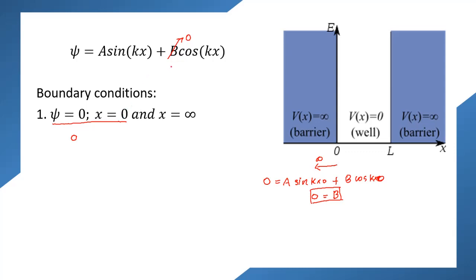What does this physically tell us? We have two waves — a sine wave and a cosine wave. The cosine function does not go to zero at x = 0, but the sine function does. Therefore the boundary condition cancels out the cosine term, and our wave equation becomes simply ψ = A sin(kx).